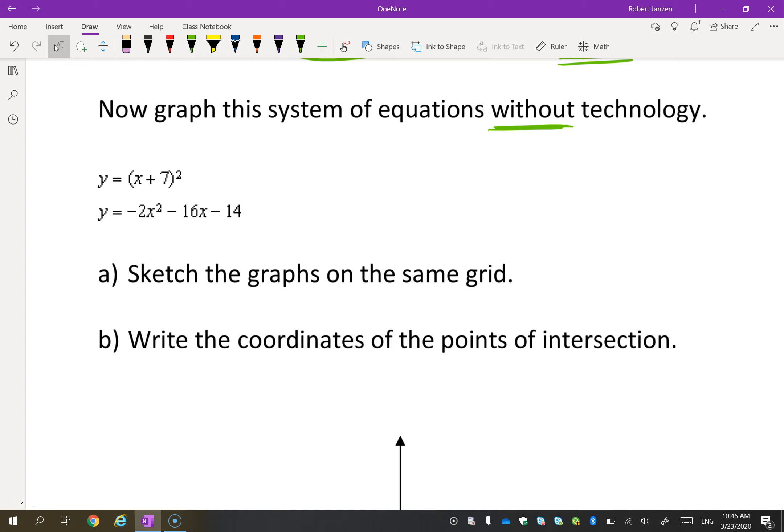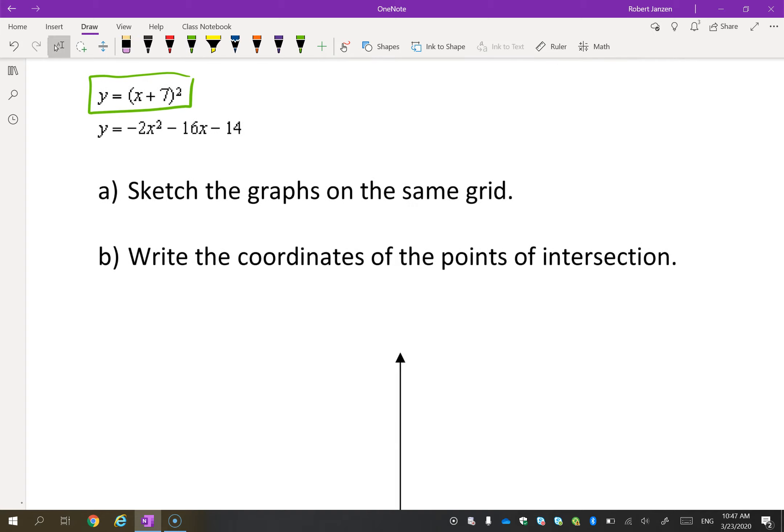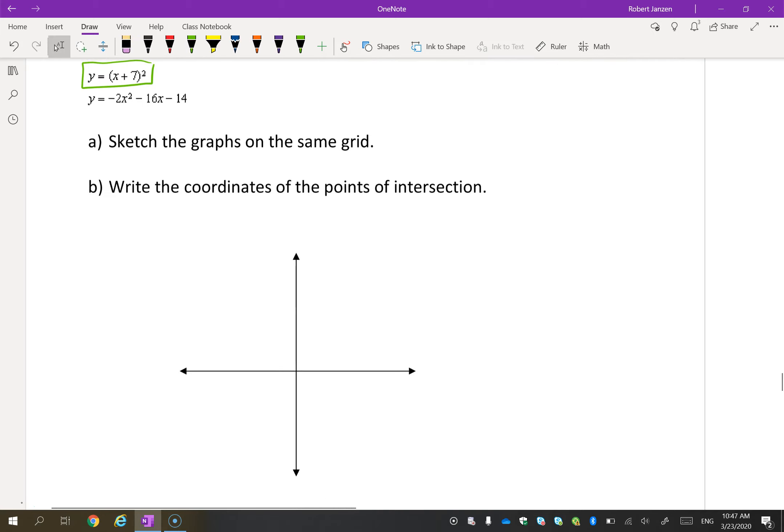So sketch the graphs on the same grid. What does this graph look like? y equals (x + 7)². Well, this should look something like this. You have a graph. Now, the y-intercept will be way up here at 49, but this is negative 7.